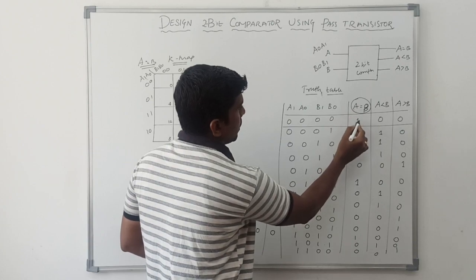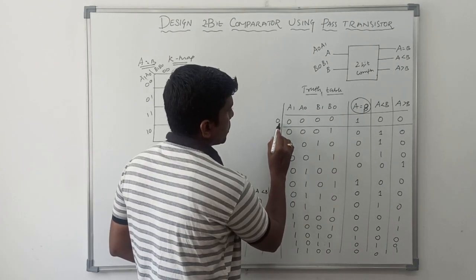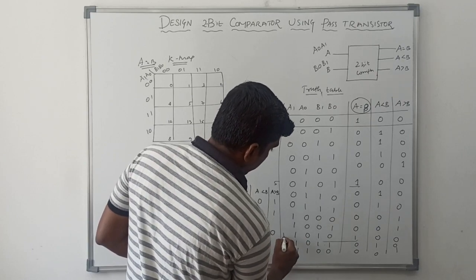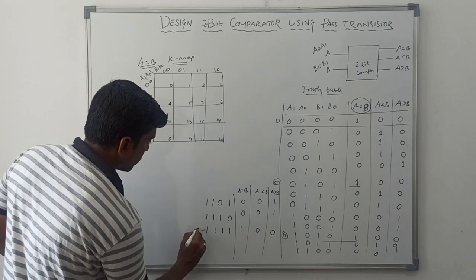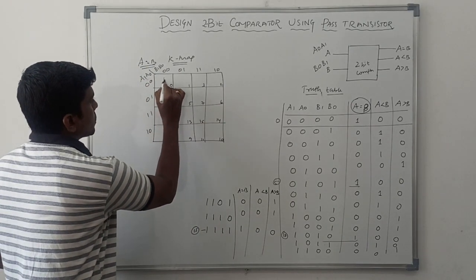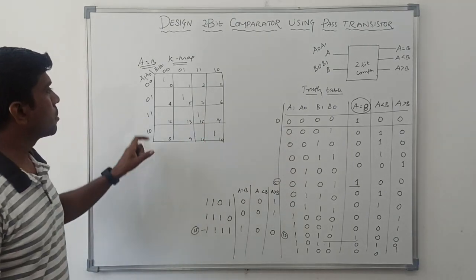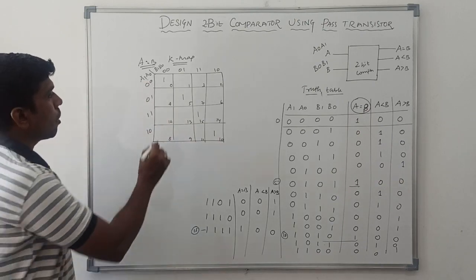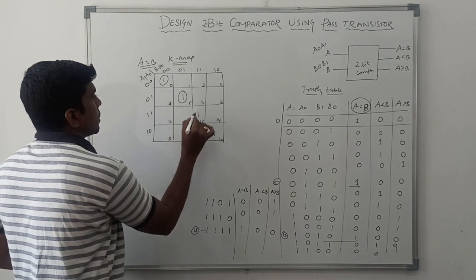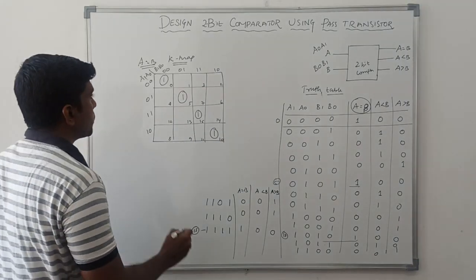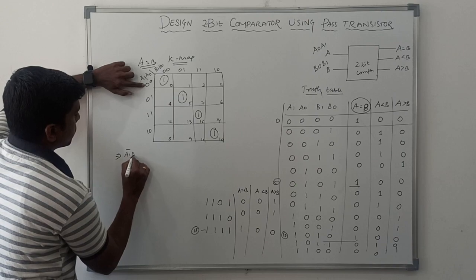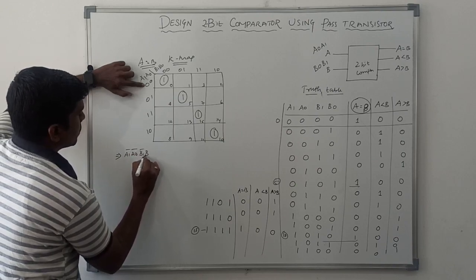Here, where A equal to B, the output is 1. The decimal values where A equals B are 0, 5, 10, and 15. In this KMAP we don't have any pairs, so all four input values are considered as individual terms. Now I am going to write the expression for this KMAP. The first term is A1 bar, A0 bar, B1 bar, B0 bar.